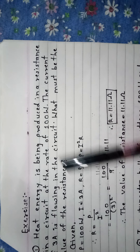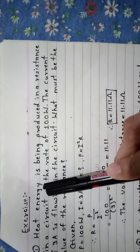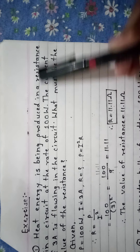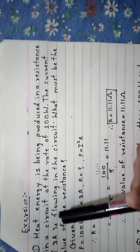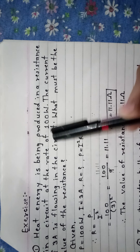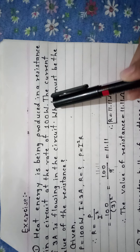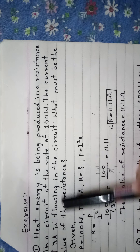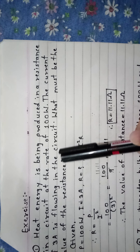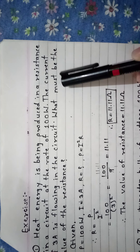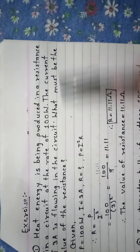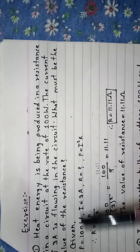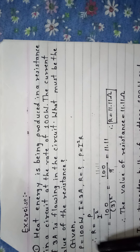First example: heat energy is being produced in a resistance in a circuit at the rate of 100 Watt. The current of 3 Ampere is flowing in the circuit. What must be the value of the resistance? Given things: